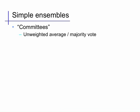The simplest kind of ensemble is simply a committee or unweighted average. If we're doing regression, we do something like an unweighted average of the predictions. If we're doing classification, we might do a majority vote. This is probably the simplest way of combining a collection of predictions.